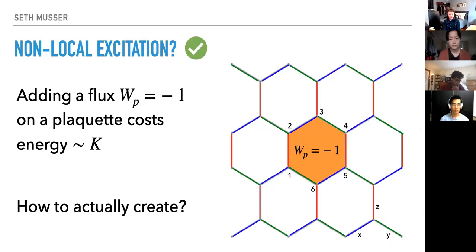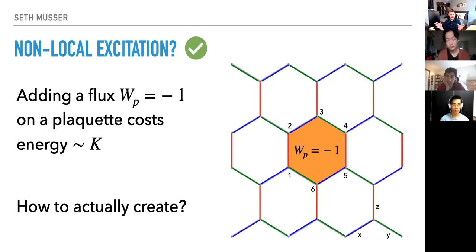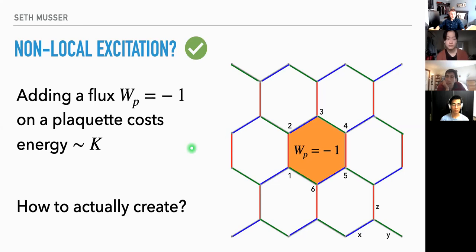The student asks whether the Majorana description tells us something about the generic physics when perturbations are added. The presenter says: I think it's kind of an unphysical tool that we use to solve this one specific limit. Later, people do parton constructions of this model with a magnetic field and map back to Majoranas, but I think that was for historical reasons. Certainly if you're thinking about a phase transition with the Kitaev spin liquid on one side, you want to translate from Majorana into complex fermion.